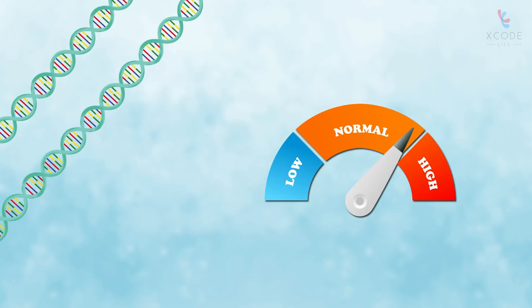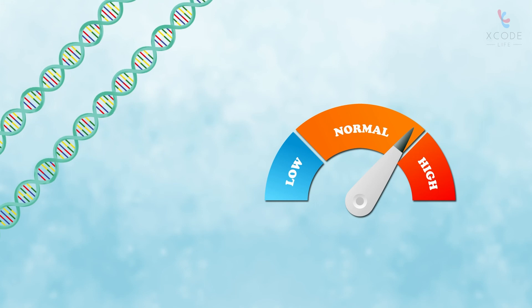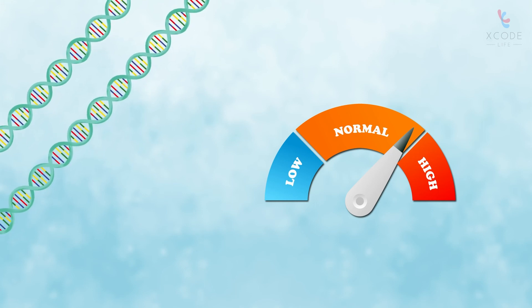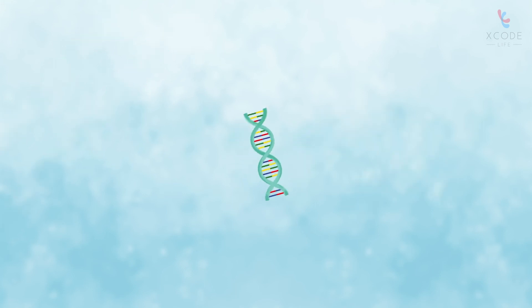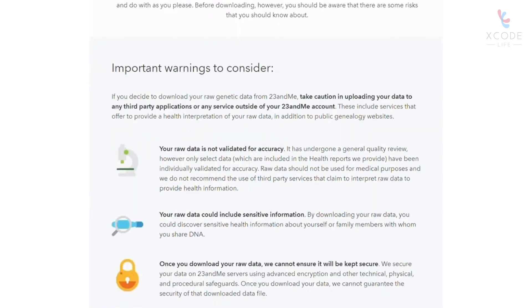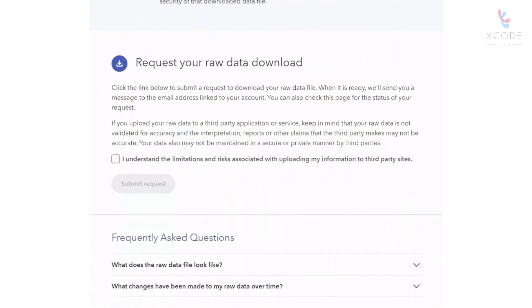Knowing your BCMO1 gene status can help you gauge your genetic risk for vitamin A deficiency. This can be done through a genetic test. Most genetic tests provide your DNA information in the form of a text file called the raw DNA data.